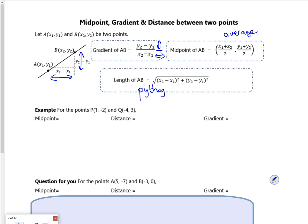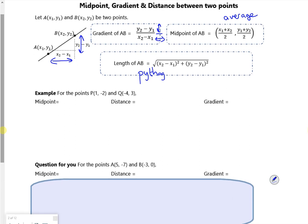Let's have a look at this example. For the midpoint, it's the average of the x's. So that's 1 plus minus 4 over 2, and minus 2 plus 3 over 2. That gives us minus 3 over 2, or minus 1 and a half, and a half. That's your midpoint between those two points.